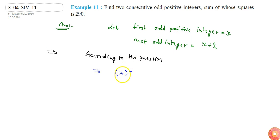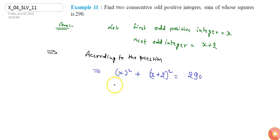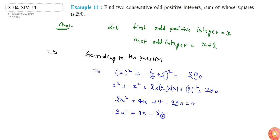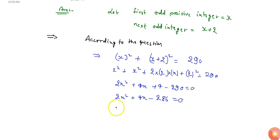According to the question, I can write: x squared plus (x+2) squared equals 290. Expanding the bracket, I get x squared plus x squared plus 4x plus 4 equals 290, which gives 2x squared plus 4x plus 4 minus 290 equals zero, or 2x squared plus 4x minus 286 equals zero.